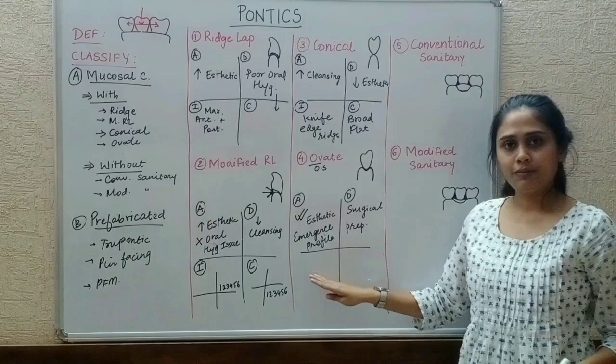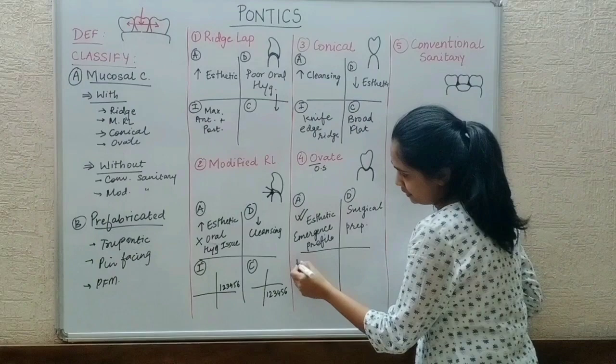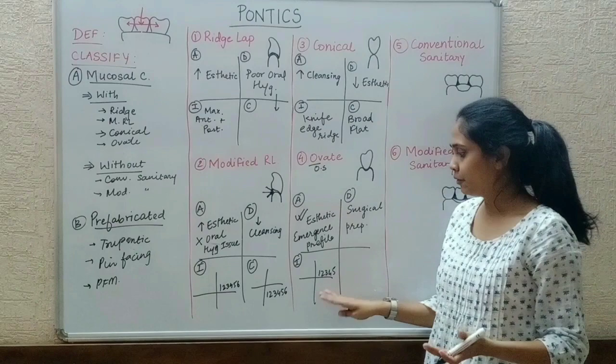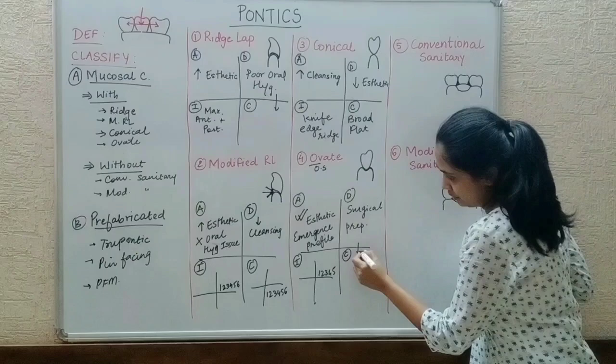For indications and contraindications of ovate pontics: as it is highly aesthetic, it is given in the maxillary anteriors, premolars (teeth 3, 4, 5), and sometimes molars — though it is preferred to keep it up to premolars. The contraindication is fresh sockets.